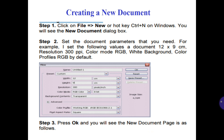And the color mode RGB, white background, color profiles RGB by default. You can see these parameters on the picture. Step number 3: press OK and you will see the document page as shown.